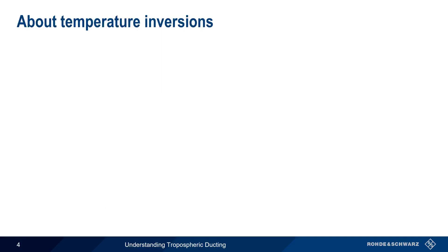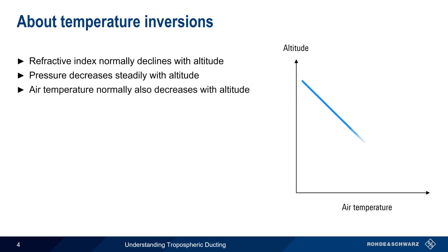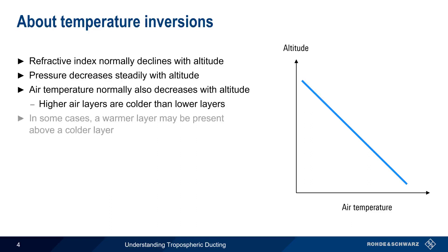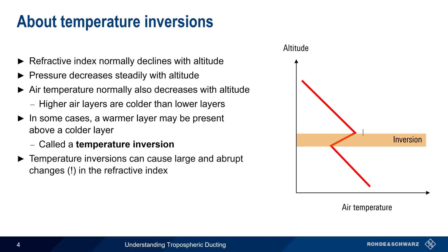As mentioned a moment ago, the refractive index of the troposphere normally decreases with altitude. This is because atmospheric pressure decreases steadily as altitude increases, and air temperature also normally decreases with altitude — that is, higher air layers are colder than lower air layers. However, some weather patterns can cause warmer air to be present over colder air, and this is referred to as a temperature inversion. These inversions can cause large and abrupt changes in the troposphere's refractive index.